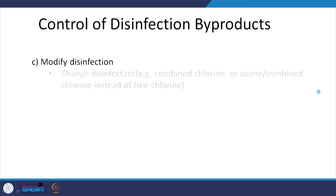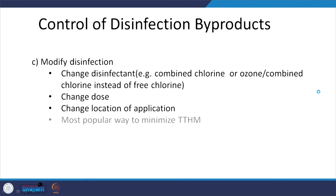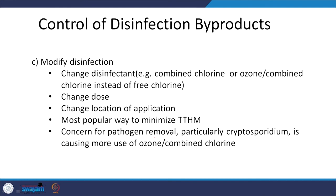You can modify the type of disinfection, change the dose, or change the location of application. Concern for pathogen removal — particularly Cryptosporidium — is causing more use of ozone or UV combined with chlorine. With that, we are done with disinfection and the traditional water treatment plant for surface waters. New challenges are coming up, which we will look at in the next session. Before that, we will look at lime-soda softening, especially relevant for hard groundwater.